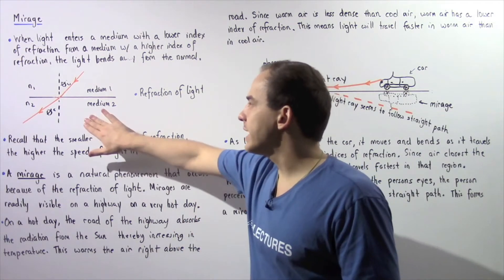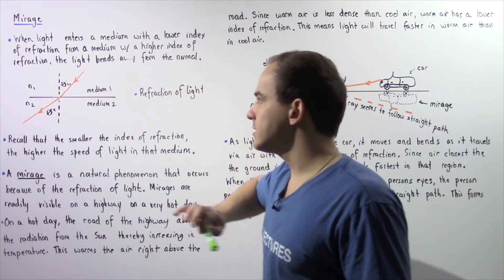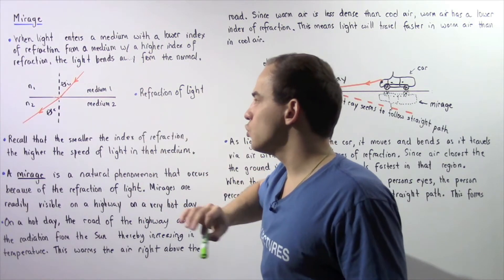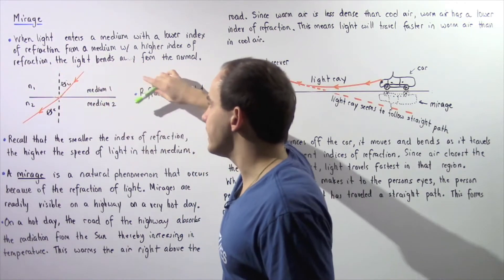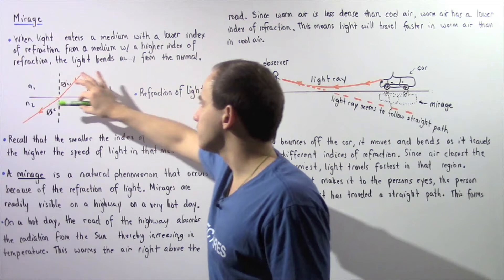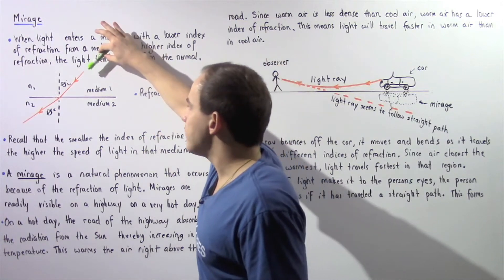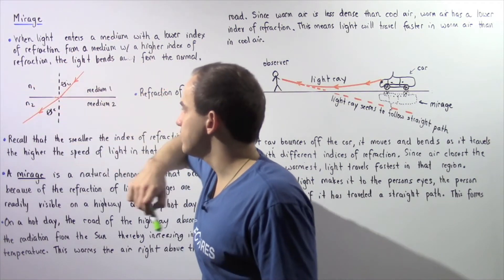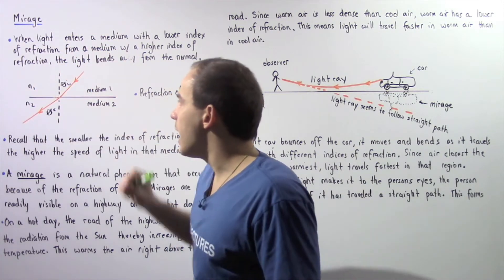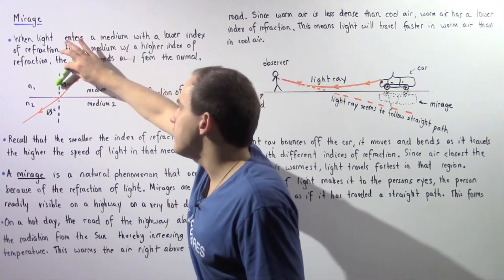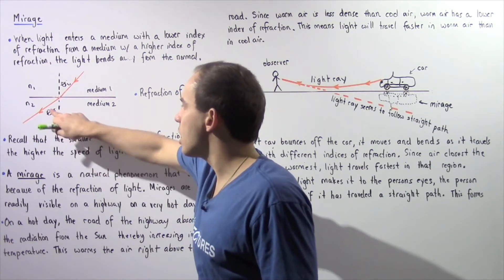Let's see exactly what that means by looking at the following diagram. We have medium one with index of refraction n1 and medium two with index of refraction n2. This line is the boundary line and this is our normal line, perpendicular with respect to the boundary line. When the single ray of light travels through medium one and into medium two, that ray of light will bend or refract away from the normal line, meaning the angle of incidence theta i will be smaller than the angle of refraction theta r.